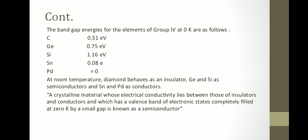At zero Kelvin, all electrons are in the valence band — the valence bands are completely filled and conduction bands are empty. With an increase of temperature, some electrons from the valence band jump to the conduction band and can conduct electricity easily. A crystalline material whose electrical conductivity lies between those of insulators and conductors, and which has a valence band completely filled at zero Kelvin separated by a small gap, is known as a semiconductor.